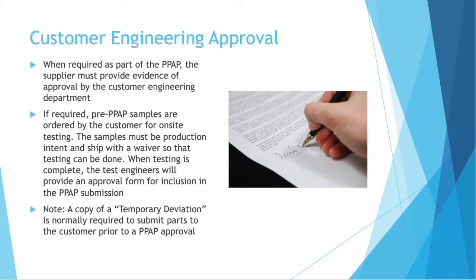Customer Engineering Approval: when required as part of the PPAP, the supplier must provide evidence of approval by the Customer Engineering Department. If required, pre-PPAP samples are ordered by the customer for on-site testing. The samples must be production intent and ship with a waiver so that testing can be done — it's kind of like products before your sample products. When testing on these parts is complete, the test engineers will provide an approval form for inclusion in the PPAP submission, basically saying these parts meet the design specifications.